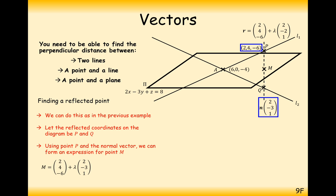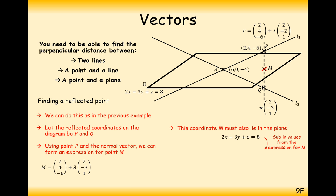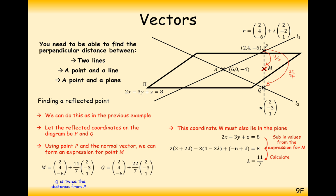We combine M into a single vector (2 + 2λ, 4 - 3λ, -6 + λ) and substitute into the equation of the plane. Solving gives λ = 11/7. So it takes 11/7 lambdas to get from P to M. We then double that value of lambda — giving 22/7 — to get from P to Q. So Q is at (2, 4, -6) + (22/7)(2, -3, 1), which gives Q = (58/7, -38/7, -20/7).